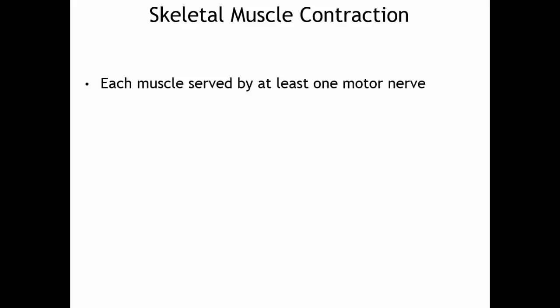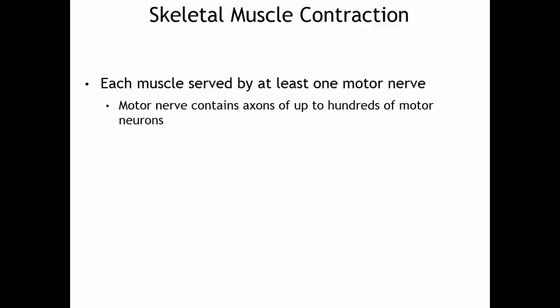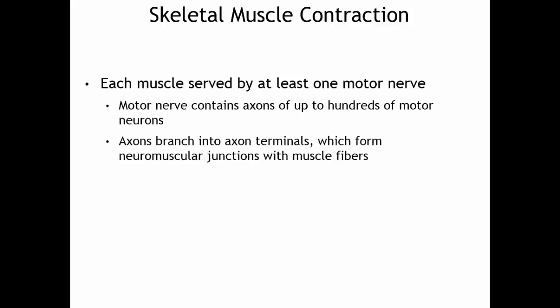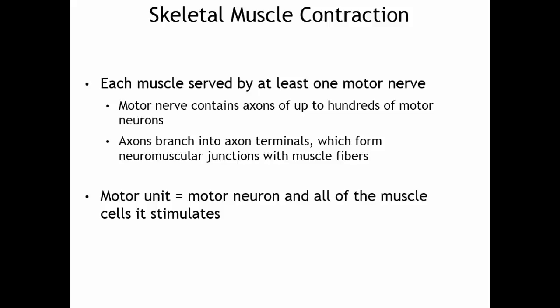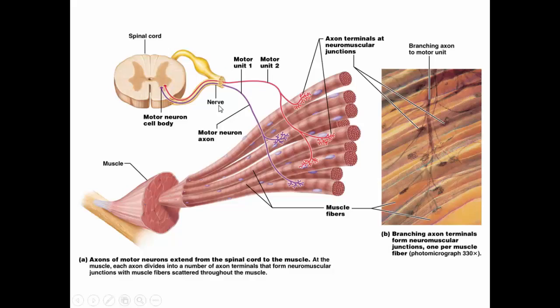Each skeletal muscle is served by at least one motor nerve, which contains axons of up to hundreds of different motor neurons. These axons all have branches to axon terminals that form the neuromuscular junctions with muscle fibers. A motor unit is the motor neuron and all of the muscle cells it stimulates. For example, one axon may interact with three muscle fibers — that is one motor unit — while another axon interacts with two muscle fibers, forming another motor unit.